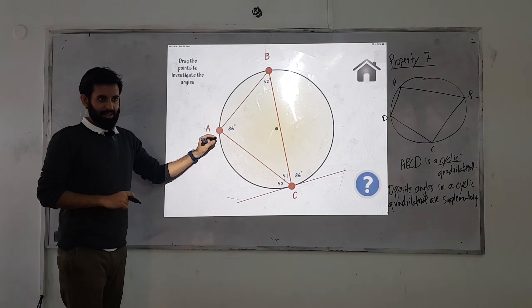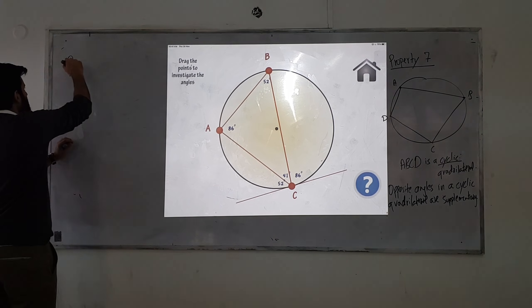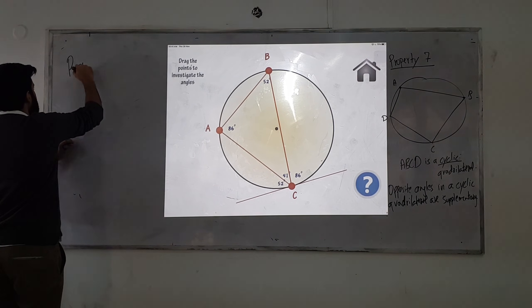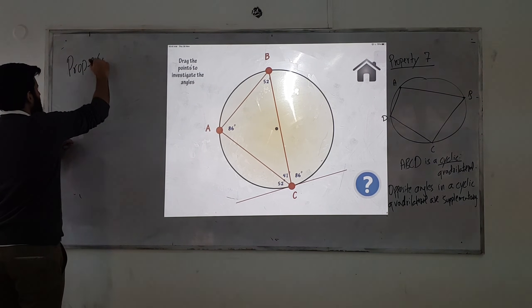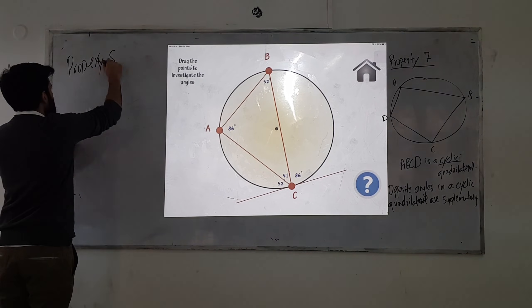Here's another example: 86 degrees. This 86 will be the same as the angle that the tangent makes with the segment opposite to 86. Can you write this down in words?